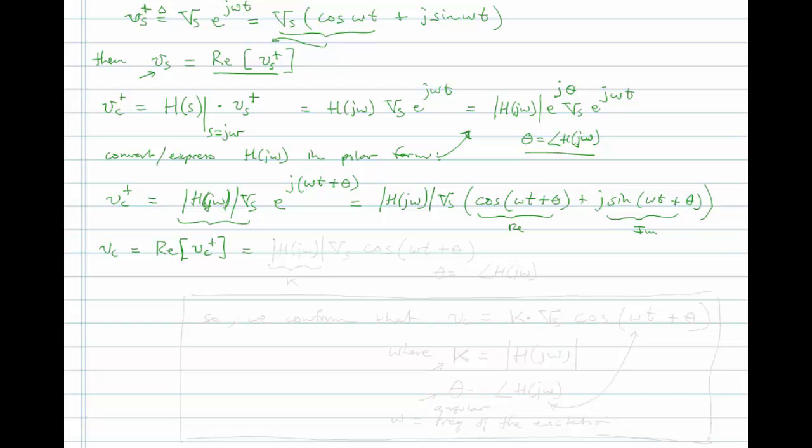And so now I can write magnitude of h of j omega times capital Vs cosine omega t plus theta, where theta is equal to the angle of h of j omega.